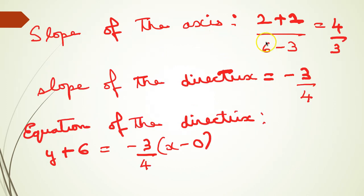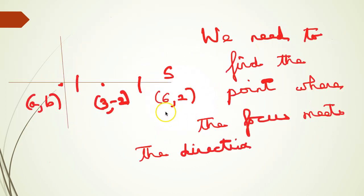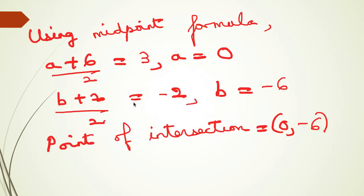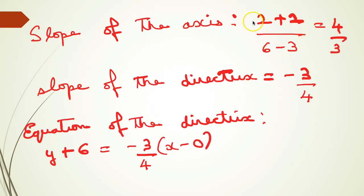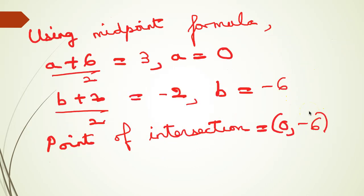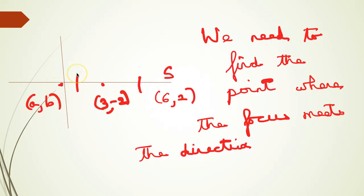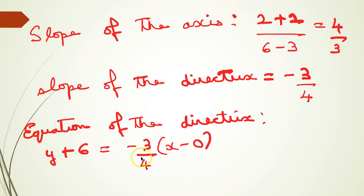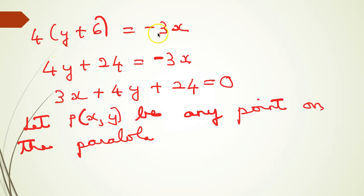Calculate the slope of the axis using points (6, 2) and (3, -2): slope = (2 - (-2)) / (6 - 3) = 4/3. Since the directrix is perpendicular to the axis, slope of the directrix is -3/4. Using point (0, -6) on the directrix with slope -3/4 and point-slope form: y + 6 = (-3/4)(x - 0), so 4(y + 6) = -3x, simplifying to 3x + 4y + 24 = 0. This is the equation of the directrix.